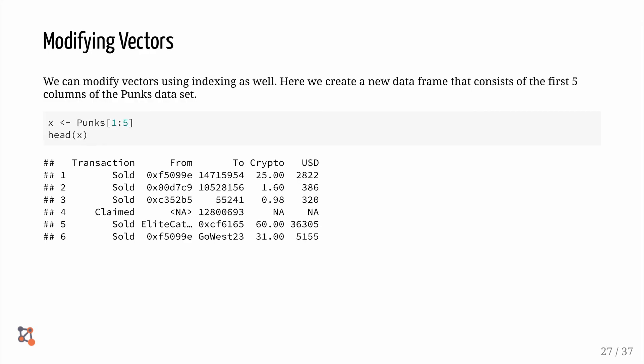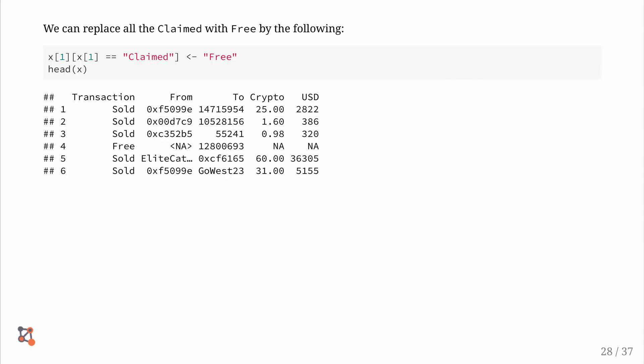Modifying Vectors. We can modify vectors using indexing as well. Here we create a new data frame that consists of the first 5 columns of the PUNX data set. We can replace all the claimed with free by using the following code.